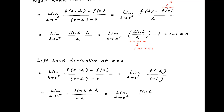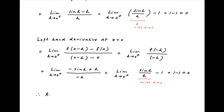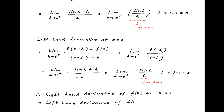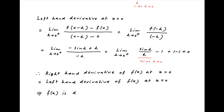This can be written as the limit as h tends to 0 from the positive side of sin h upon h minus 1. When h tends to 0, sin h upon h tends to 1, and therefore the value of the left-hand derivative is equal to 1 minus 1, which is equal to 0. Therefore, the right-hand derivative of f(x) at x equal to 0 is equal to the left-hand derivative of f(x) at x equal to 0. This implies that f(x) is differentiable at x equal to 0, which is the required result.